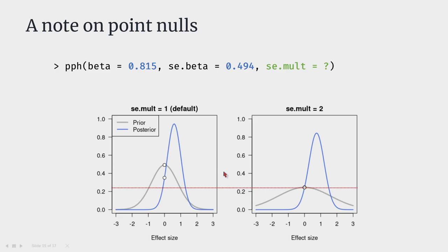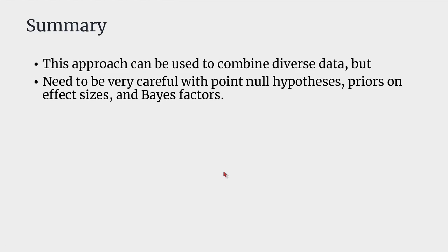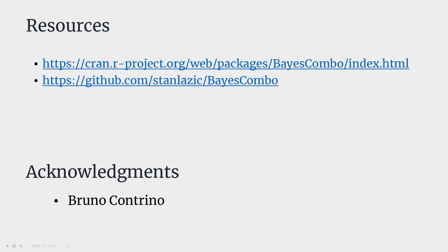In summary, this approach can be used to combine diverse data, but you need to think very carefully about your priors if using the point null, as it has a large effect on the Bayes factors and subsequent calculations. If you have diverse data and think a standard meta-analysis is not appropriate, this might be worth considering. The BayesCombo package is on CRAN and also on GitHub. Thanks to Bruno who helped convert the R code and helped create the package, and thank you for your attention.